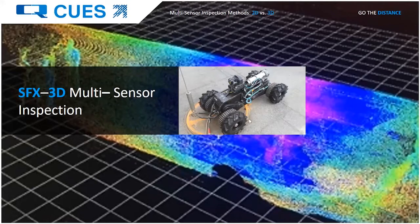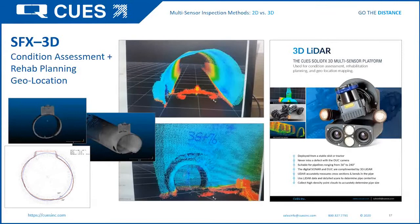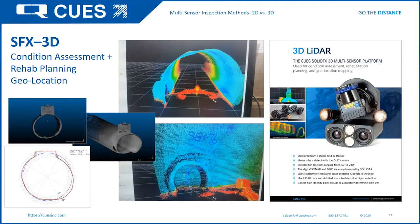Now I'll talk about Solid FX 3D. It is still a multi-sensor platform — we run the Duck camera, sonar, and H2S sensors as optional, same as the 2D platform. The primary difference is we move to a three-dimensional sensor — the small black lens you see circled — which we rotate continuously 360 degrees to create a 3D point cloud. The result is a whole hemisphere of points as opposed to just a slice or cross-section of points generated by the 2D lidar.